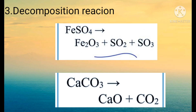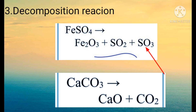Here are the examples of decomposition reactions. The first example is ferrous sulphate, FeSO4, which is green in colour. On heating, this compound breaks to form three products: ferric oxide Fe2O3, sulphur dioxide SO2, and sulphur trioxide SO3. The green colour compound FeSO4 on heating changes to a reddish brown compound, that is ferric oxide. This is a decomposition reaction.